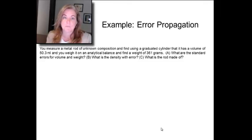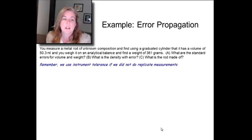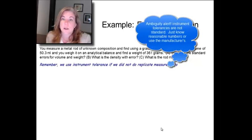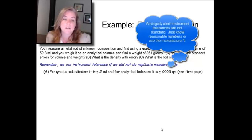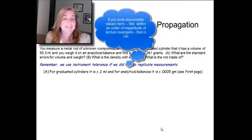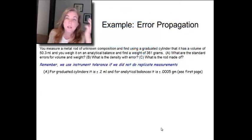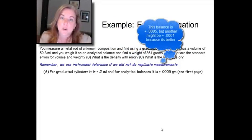So, pretty straightforward equations to use. Let us go through a couple of examples. Let's take that example of the unknown metal rod. Say we measured the volume to be 50.3 mils, and we weighed it on an analytical balance, rather a pan balance, and found it 361 grams. What are the standard errors for volume and weight, what's the density with error, and what's the rod made of? Remember, you use instrument tolerances to get at those errors if you didn't do replicate measurements. For graduated cylinders, I'll take plus or minus 0.2 mils. For analytical balance, I'll take 0.0005 grams. Now, you can have many different choices for these, and so the problem with instrument tolerances is I can't always tell you the right answer, it depends on the graduated cylinder, it depends on the balance, but I'm giving them to you in the measurement here.